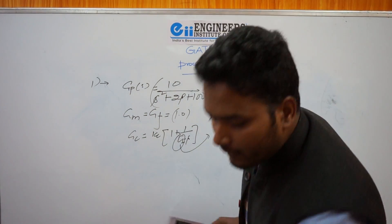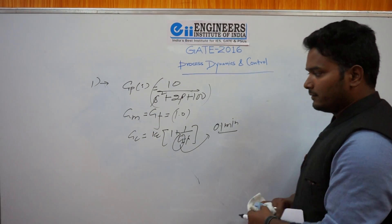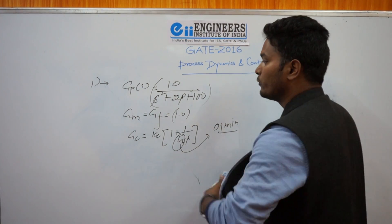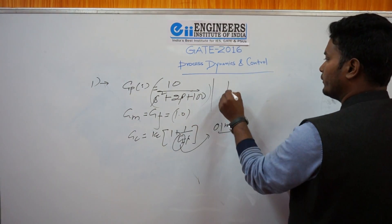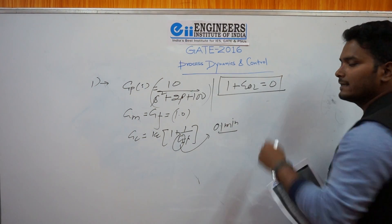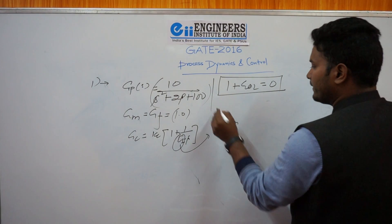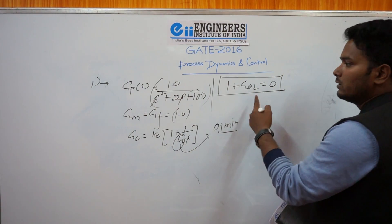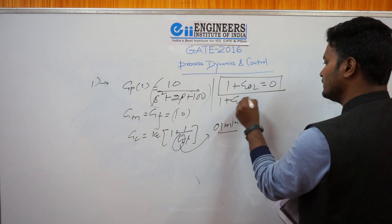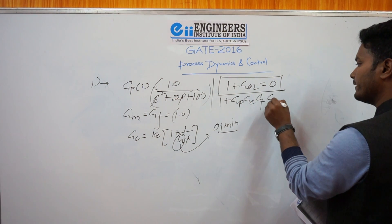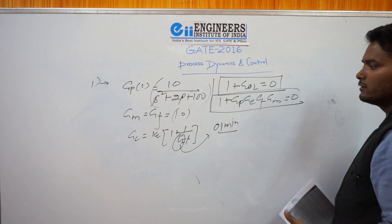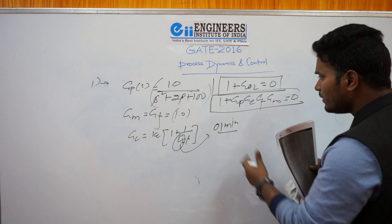From the Routh criterion you have to find the characteristic equation, which is 1 plus G open loop equals 0. This is called the characteristic equation. G open loop is GP times GC times GF, so 1 plus GP·GC·GF·GM equals 0.